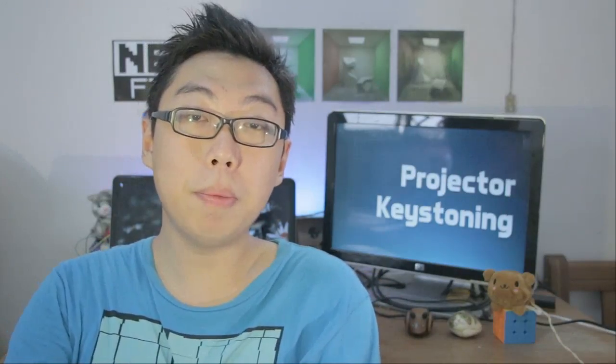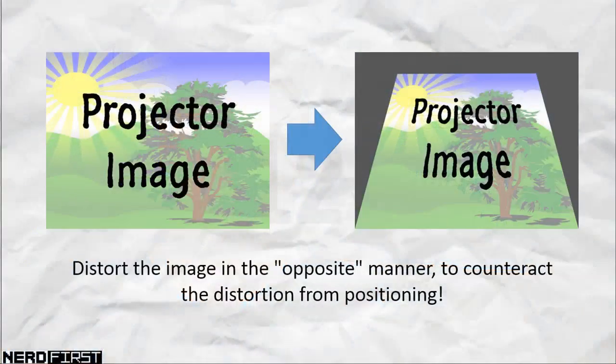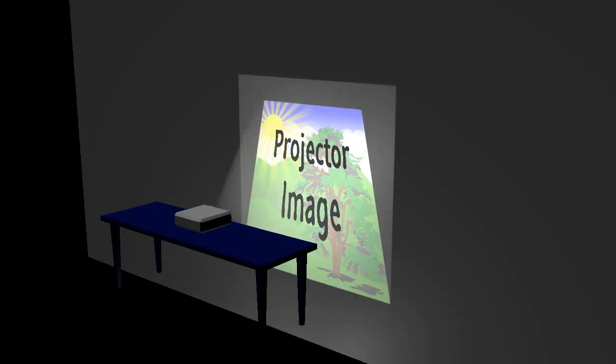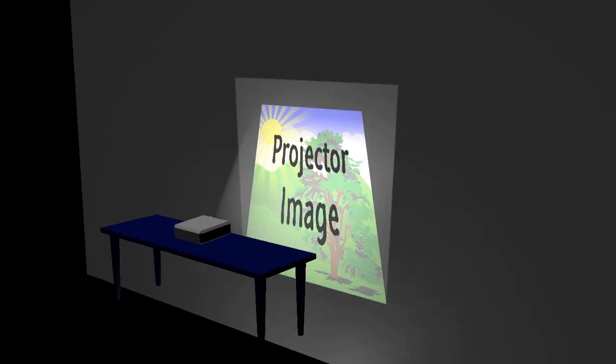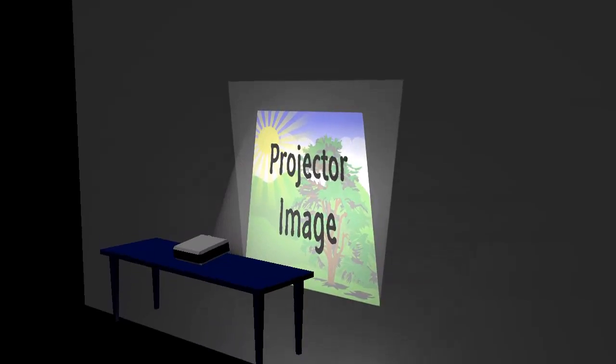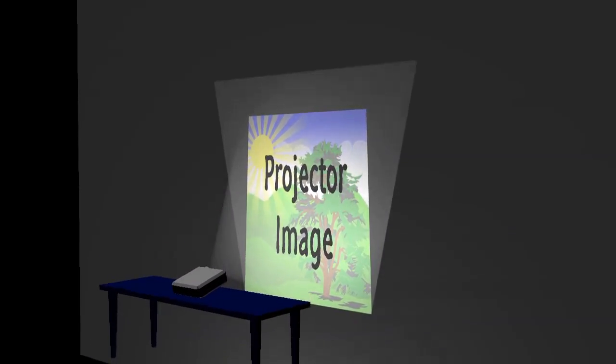Essentially to correct for this problem, a function known as keystoning exists. If you know that an image is going to be distorted in a certain way, you can distort the image first in the opposite manner. That is, if your projector is angled upwards, you would essentially have an image that starts off narrower at the bottom and flares upwards. So you can modify your image so that the original image is smaller at the top and wider at the bottom. When you project that image and if you did your calculations right, these two effects cancel out and you get a nice rectangular image.